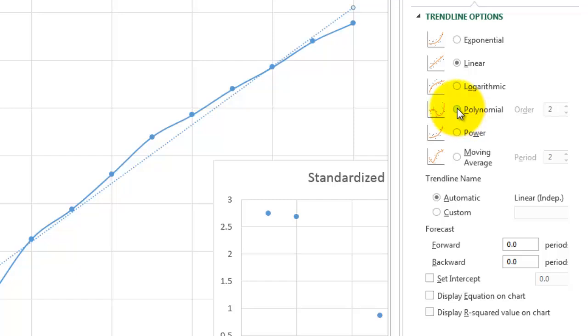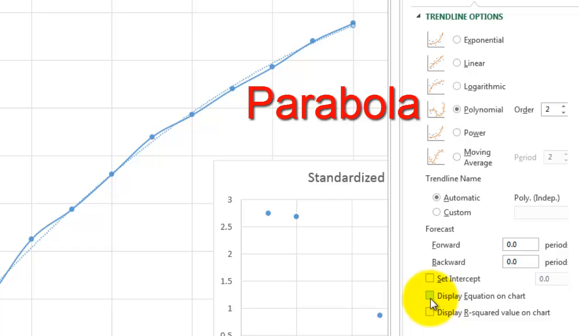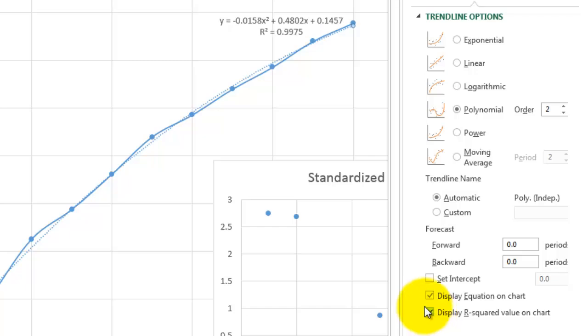But a good option very often is polynomial. Let's try the order of two. Don't forget to display the equation on the chart and display the R-squared value on the chart.